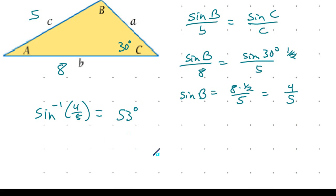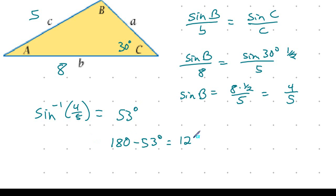However, there is another possibility. Recalling the ambiguous angles from the previous unit, I also have the possibility of 180 minus 53 degrees, which gives 127 degrees. That value is still less than 180, so this is also a valid possibility, giving two possible triangles.